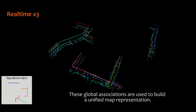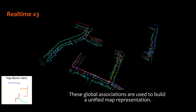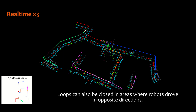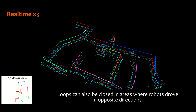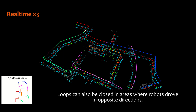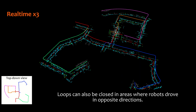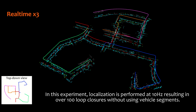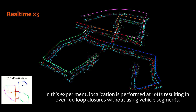These global associations are then used to build a unified representation. Loops can also be closed in areas where robots drove in opposite directions. In this experiment, localization is performed at 10 Hz resulting in over 100 loop closures.